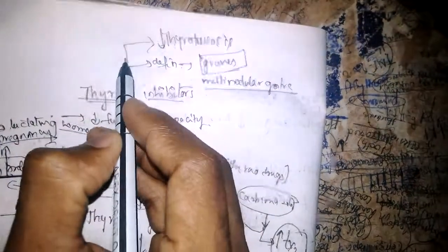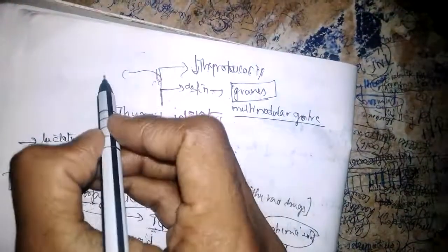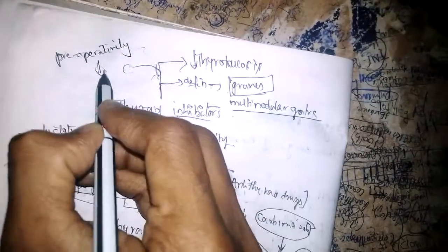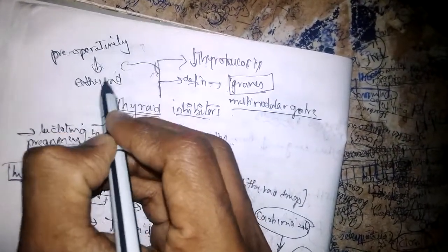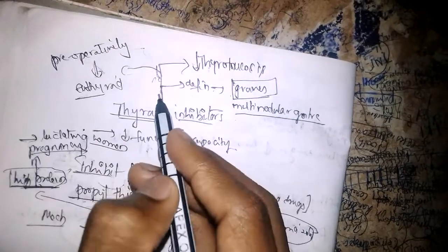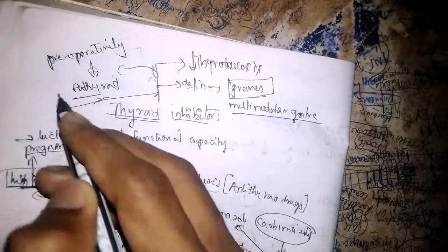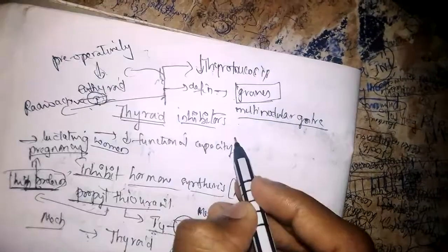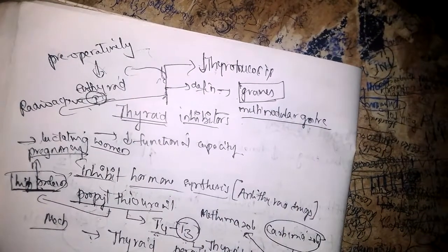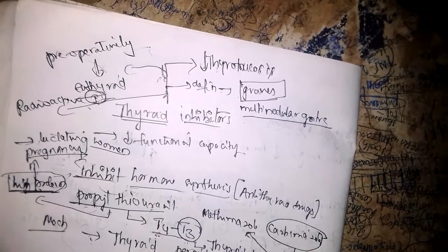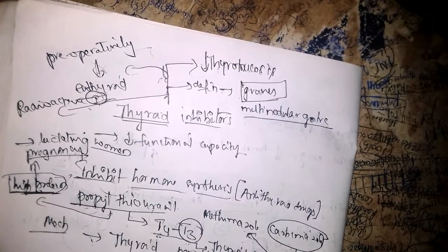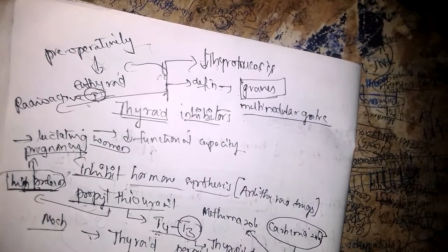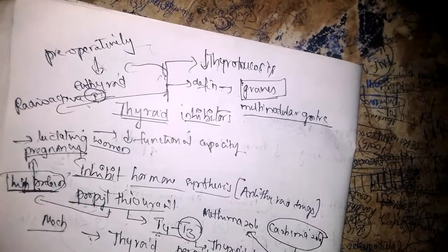These drugs can be used preoperatively to make the patient euthyroid. They can also be used along with radioactive iodine. In summary, the three important uses are: definitive treatment for multinodular goiter and Graves' disease, preoperative use to achieve euthyroid state, and use alongside radioactive iodine.